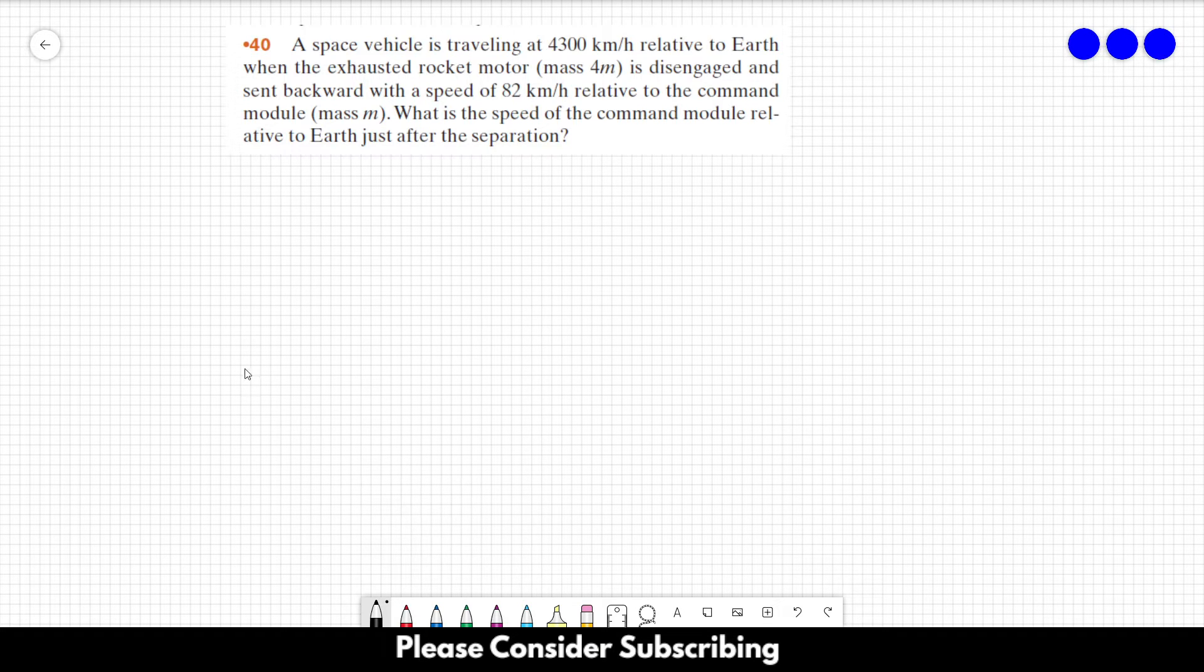Okay, so initially we have planet Earth here and we have a rocket. Let's say that our rocket is something like this, and initially the speed of the rocket is 4,300 kilometers per hour. And after a while, those parts separate.